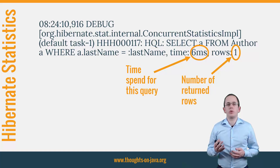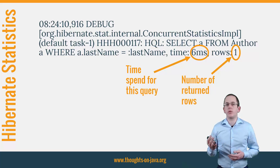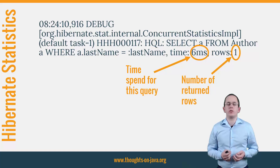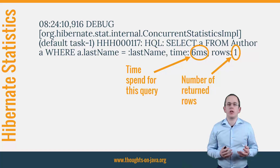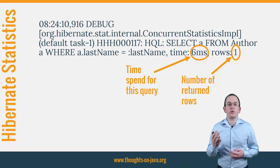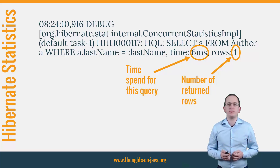The number of returned rows can indicate inefficient implementations. If you find a query which returns several hundreds or even thousands of rows, you should have a more detailed look at it and check how you process all that information and if that can't be done by the database. Quite often you could do the same with a simple database function and just select the result of it. I discuss the execution of data-heavy operations via stored procedures and database functions in the fourth part of this course.